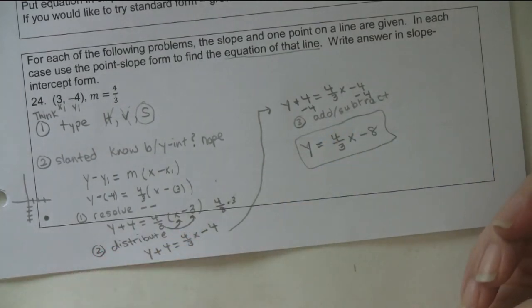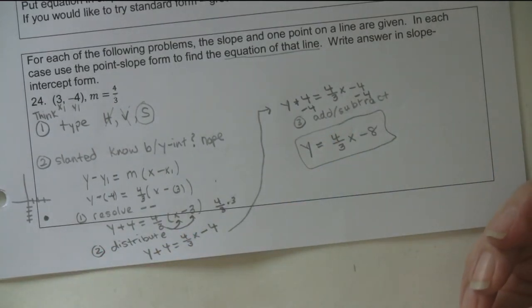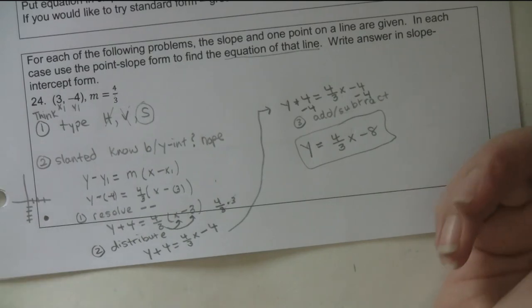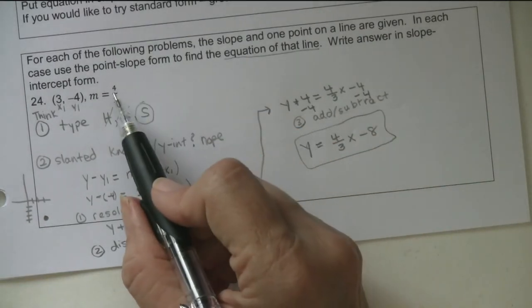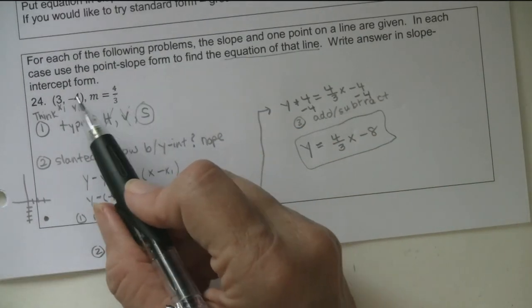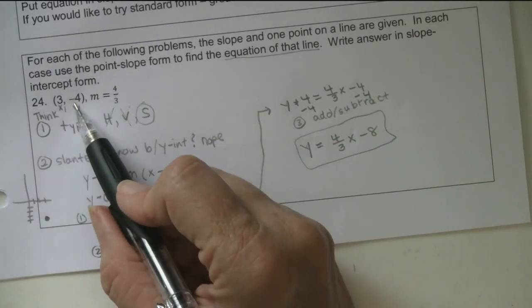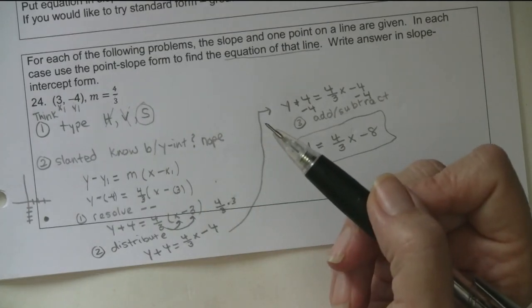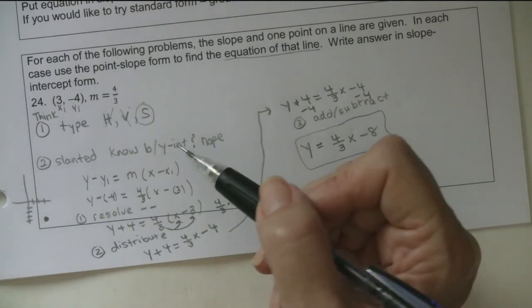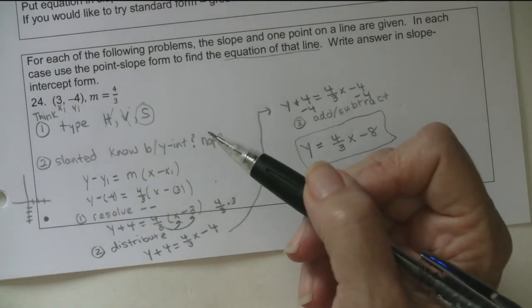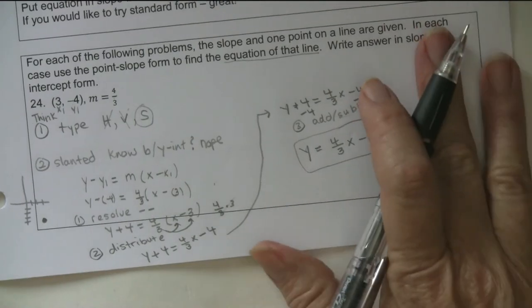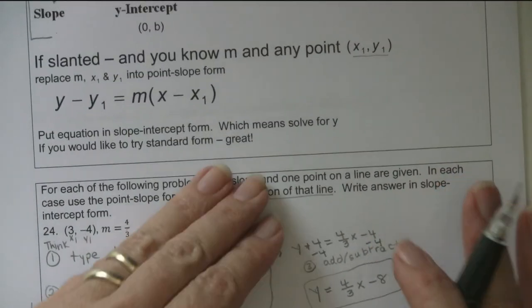That's the only hard case - when you have a slanted line and don't know the y-intercept. That's why I test for the other types first, because they're a lot less work.